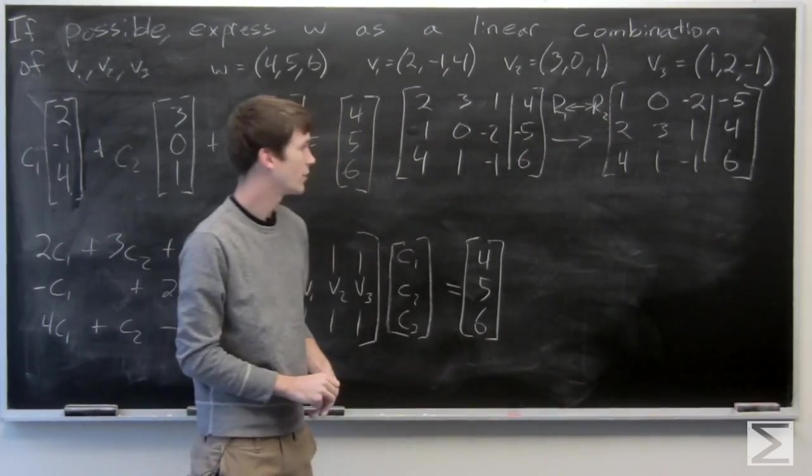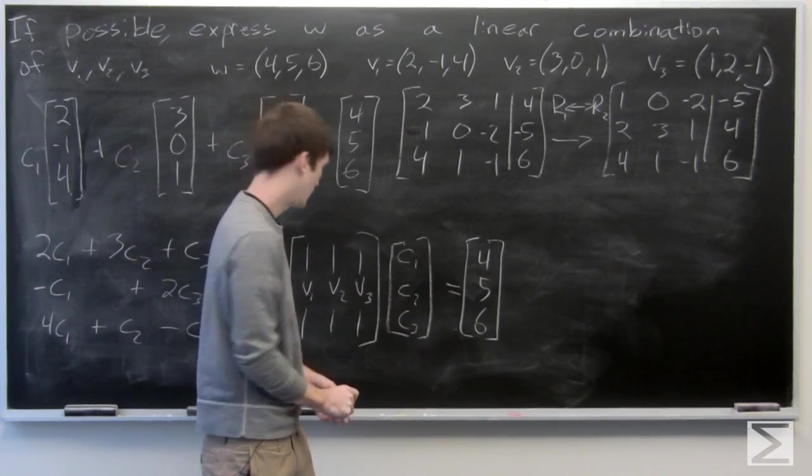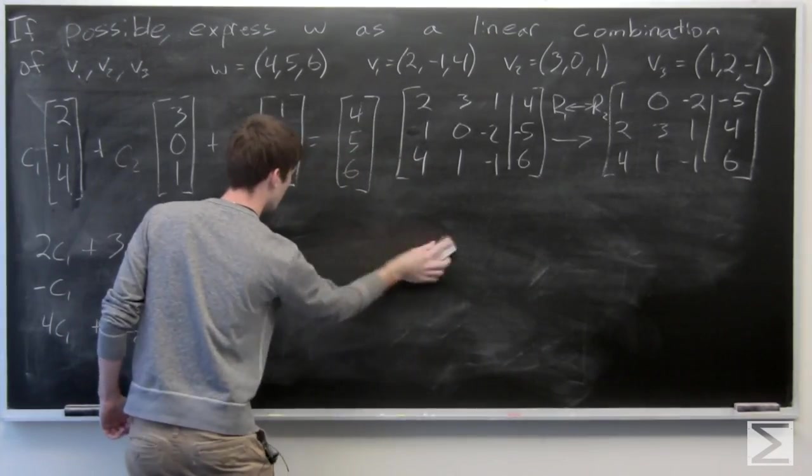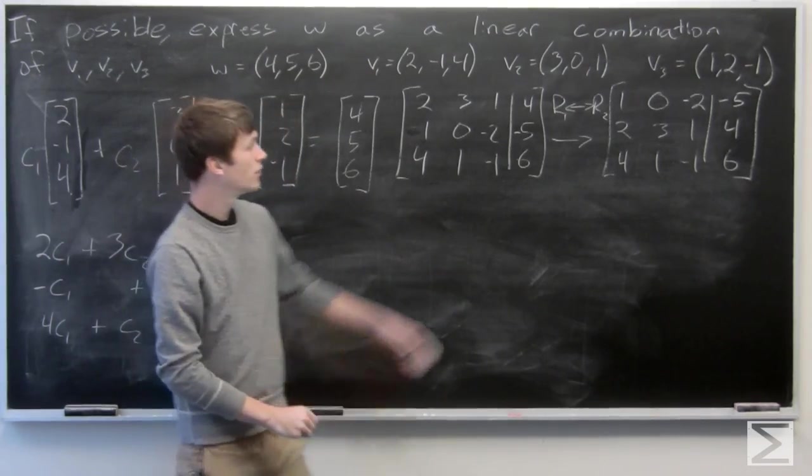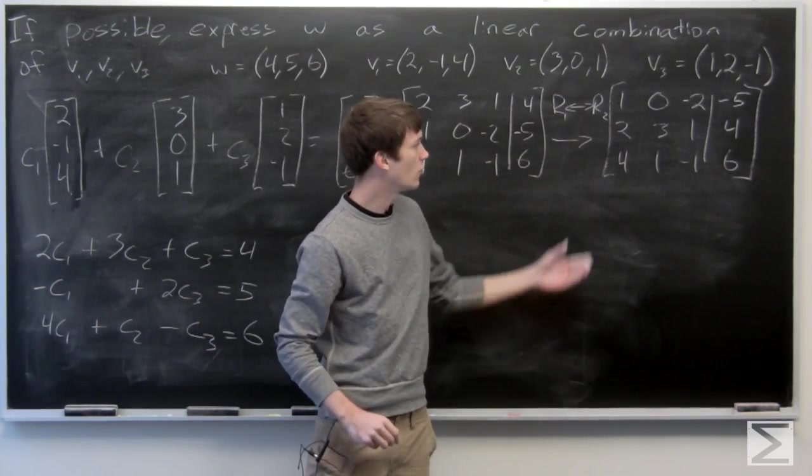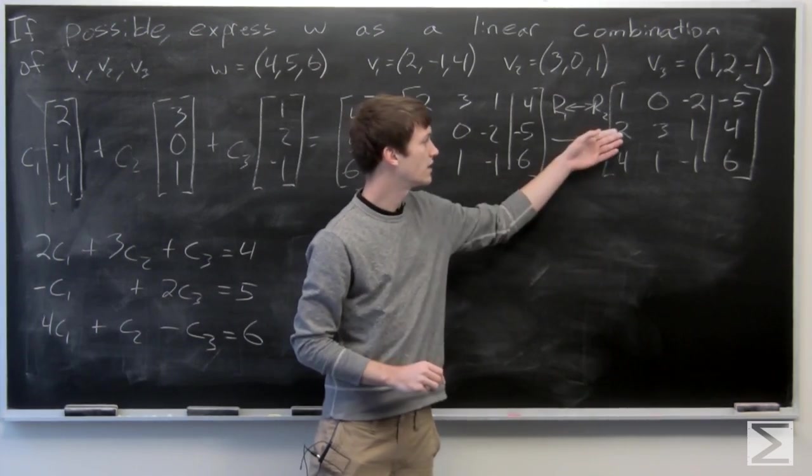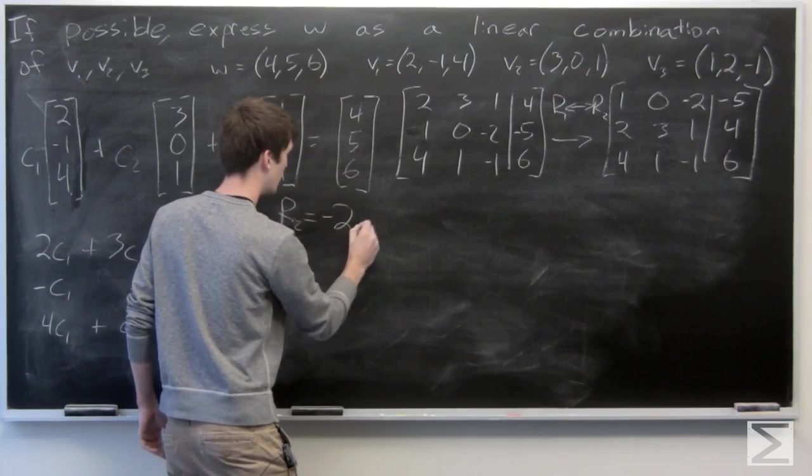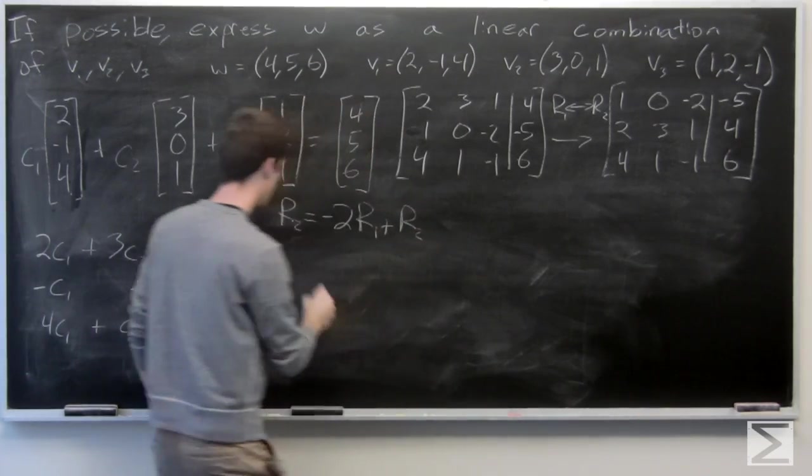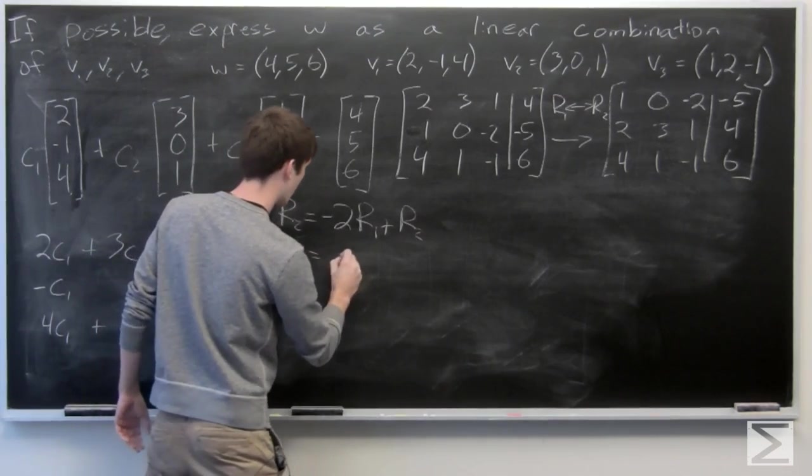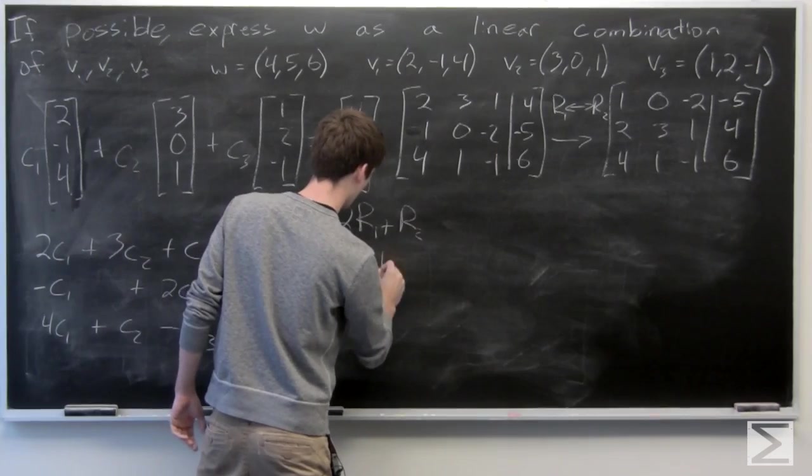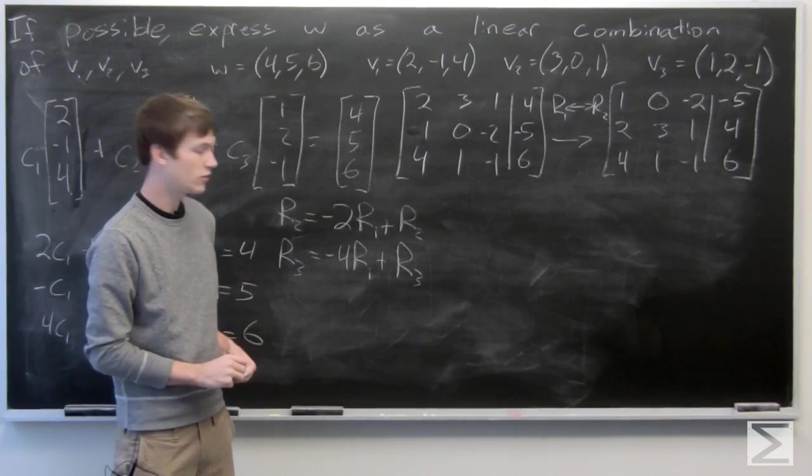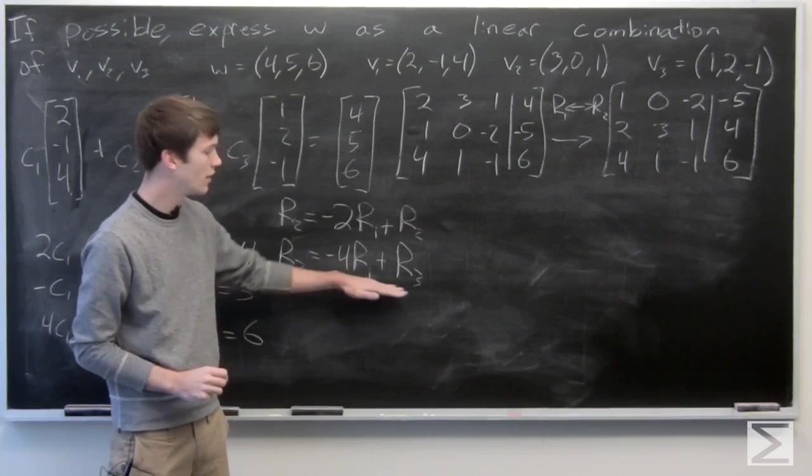And we get the following matrix. And now we can go ahead and multiply negative 2 times row 1 and add it to row 2, and set row 2 equal to that. And then we'll do similarly. We'll set row 3 equal to negative 4 times row 1 plus row 3.